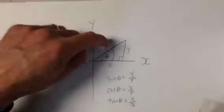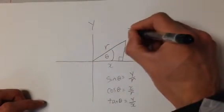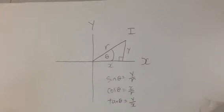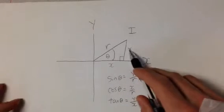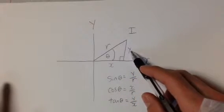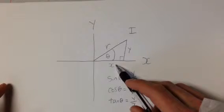So in this quadrant, we call that quadrant 1. In this quadrant, there's really no change. Y is just another name for the opposite side, and x is just another name for the adjacent side.